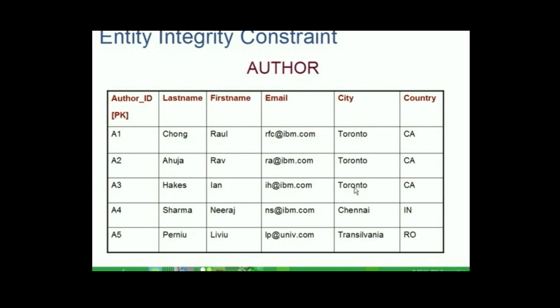For explanation, I shall take the example of the relation author we have already seen in previous presentations. As you know, author ID is the primary key of this relation. This key identifies each tuple in the relation — for example, author ID A1 points to the author Raul Chong from Toronto. What if I replace the value A1 with null? We can still identify the author Raul Chong. But what if I replace A4 also with null? Now, which null would identify which row? Hence, this entity integrity constraint emphasizes having no null values for attributes playing the primary key role.